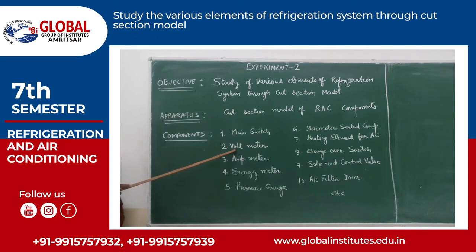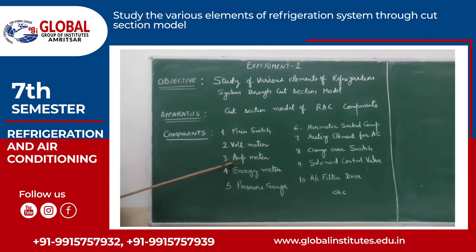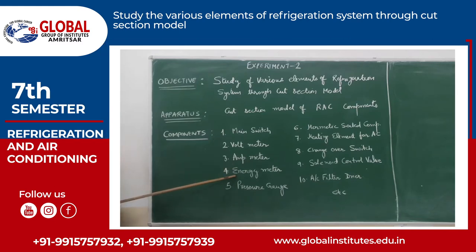The second component is the voltmeter. It is an electrical device used to check the voltage of the main line. The third component is the ammeter. It is an electrical device used to check the amperes of all controls and components installed in any unit.